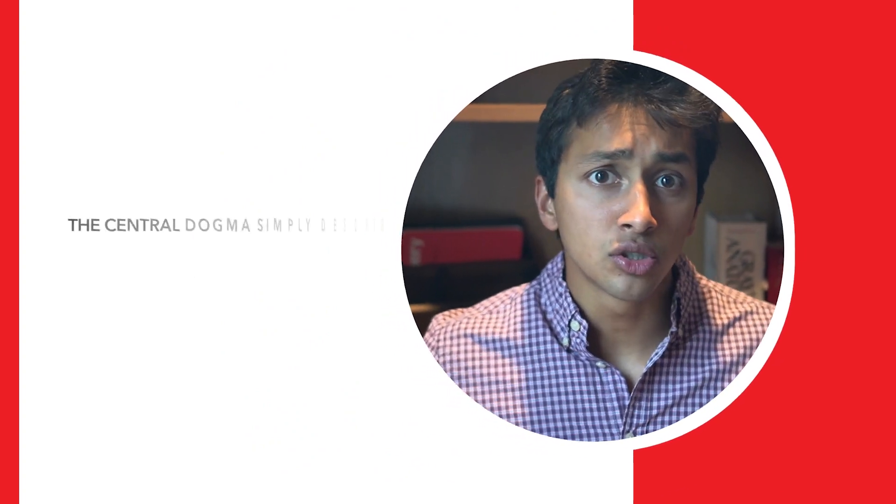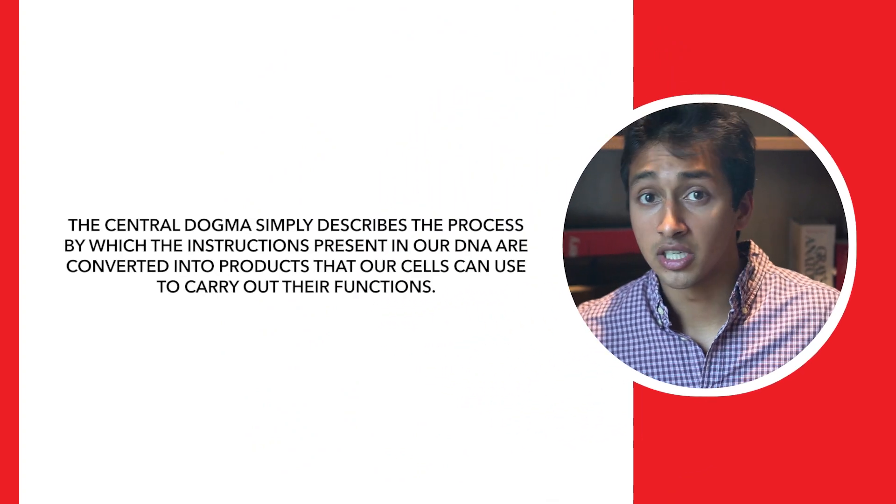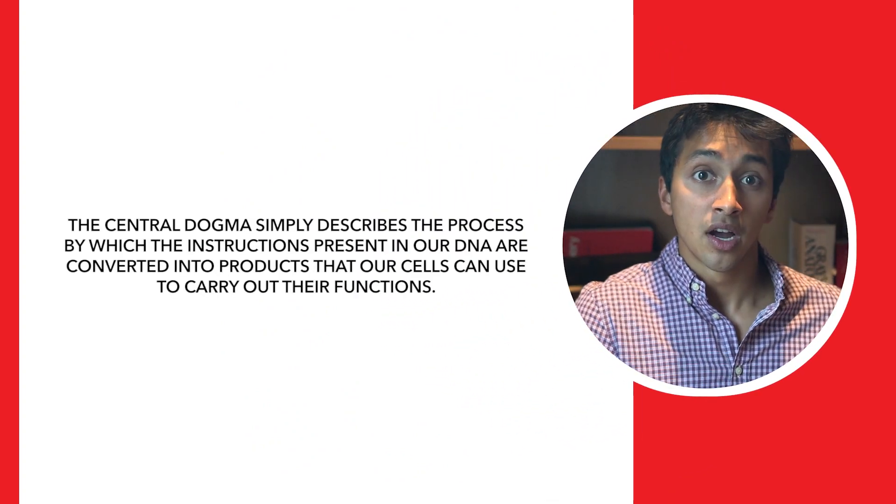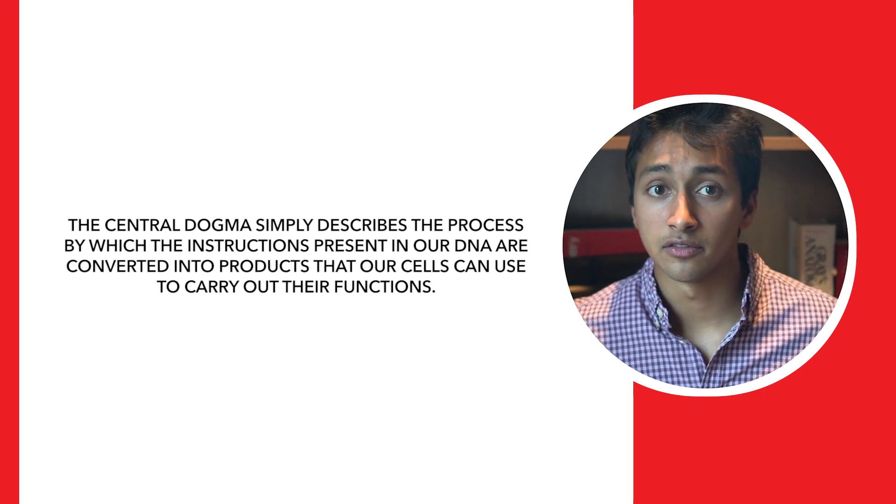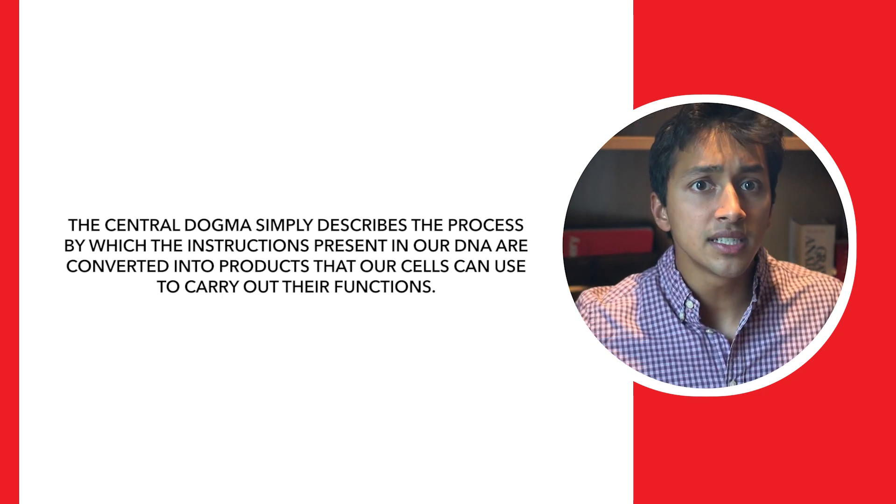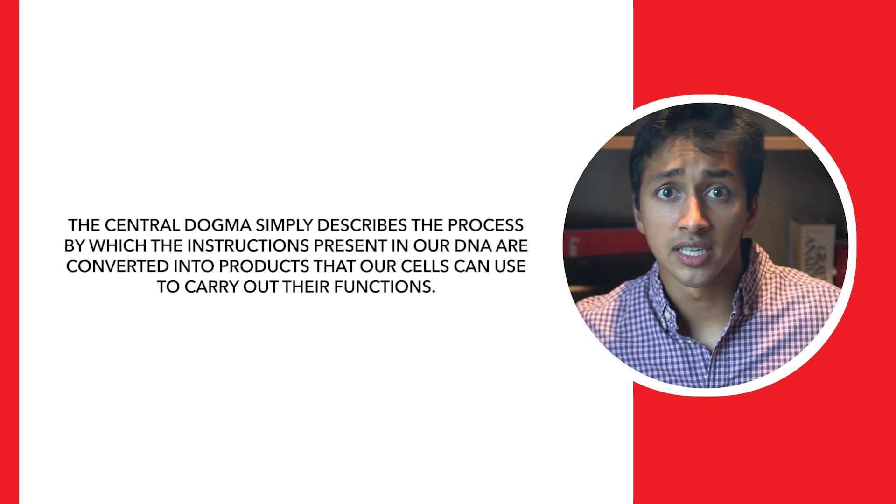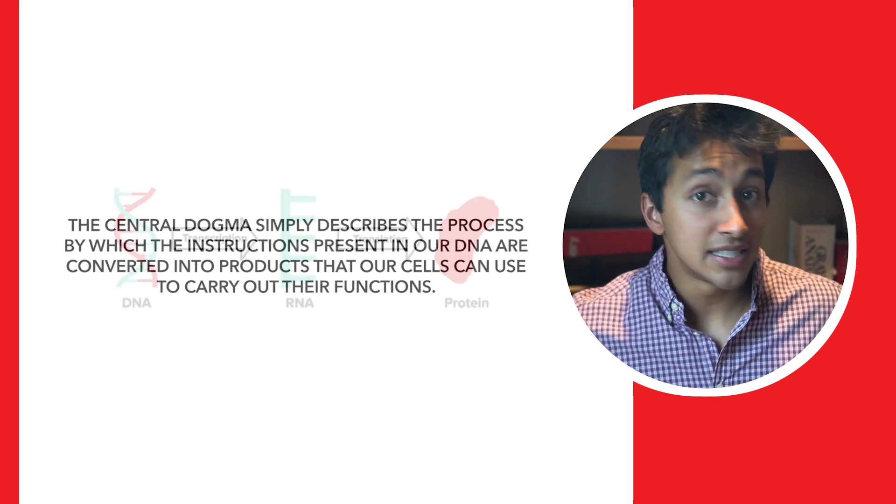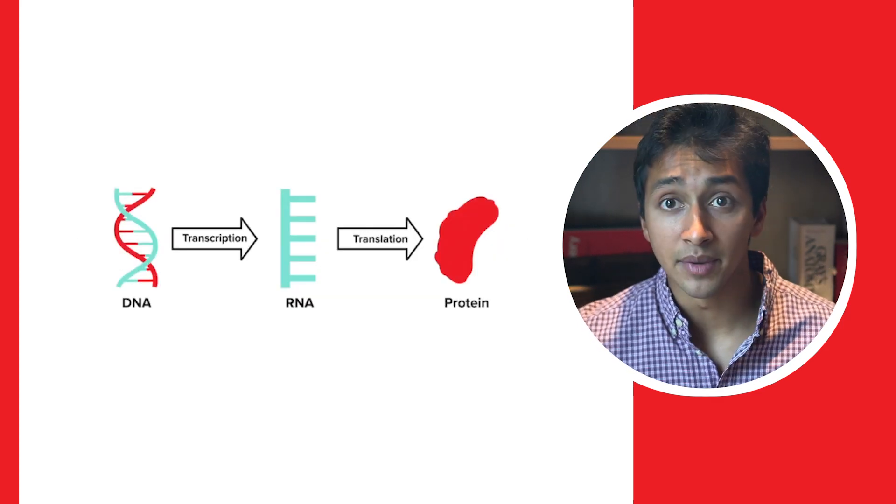To start, let's go all the way back to the central dogma of biology. Fundamentally, the central dogma describes the process by which the instructions present in our DNA are converted into products that our cells can use to carry out their functions. While recent discoveries have uncovered some additions and exceptions to that rule, this simple schema is what you'll need to know for the MCAT.